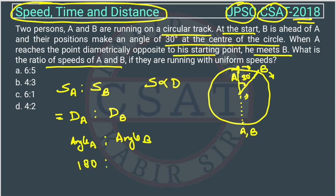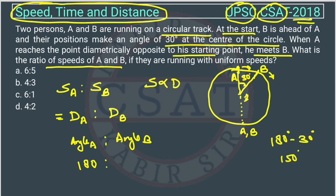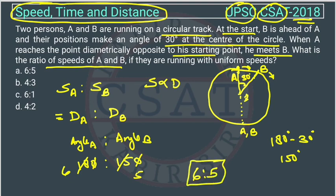B traveled 180 minus 30, total is 180. So the angle traveled by B will be equal to 180 degrees minus 30 degrees, which is 150. The zeros cancel, and 3 fives are 15, 3 sixes are 18 — so the ratio is 6 is to 5. This is the answer, option A.